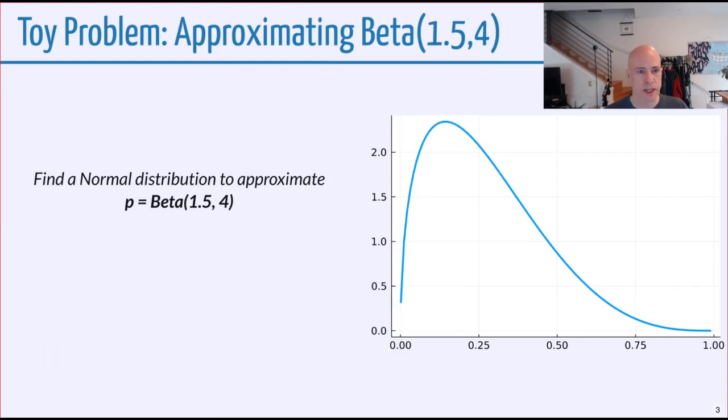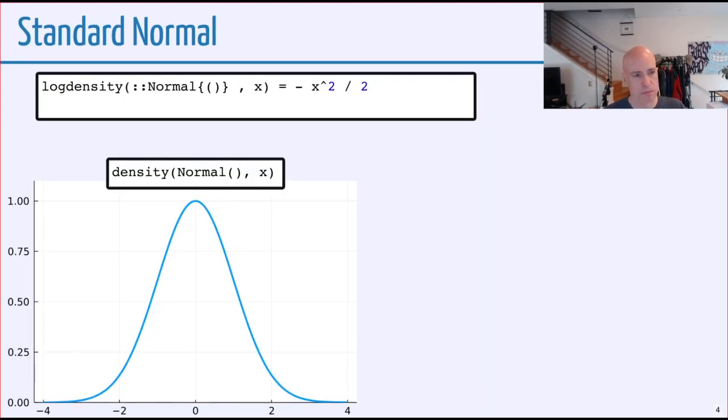Let's look at a toy problem to try to get a sense of how some of this works. We're going to start with a beta distribution with parameters 1.5 and 4. Our goal will be to fit a normal distribution to approximate this. So just as a warm-up, let's start with the standard normal.